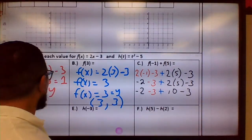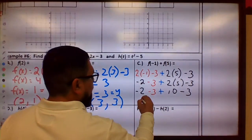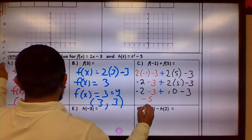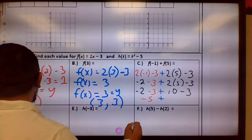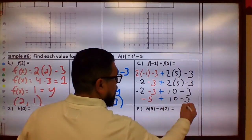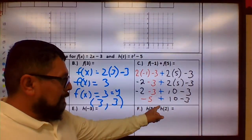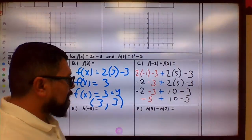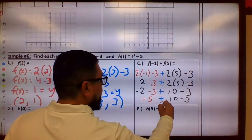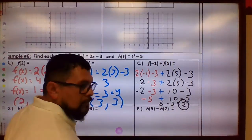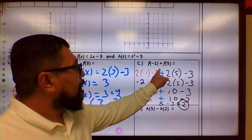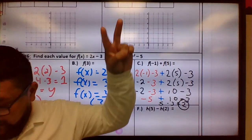And now we have addition and subtraction, so we have a subtraction here, so this becomes negative 5 plus 10 minus 3. Then addition still here, left to right, so this is going to be 5 minus 3, so your answer is 2. So F of negative 1 plus F of 5 is 2.